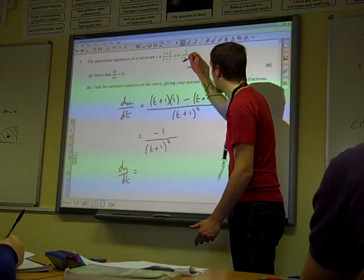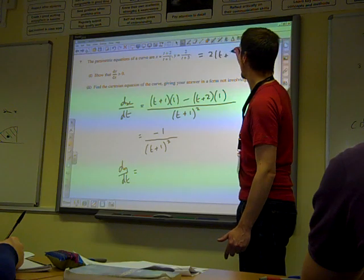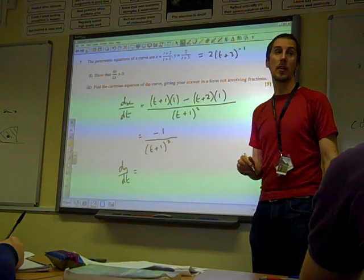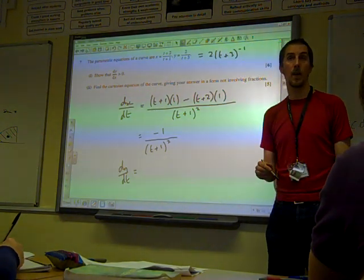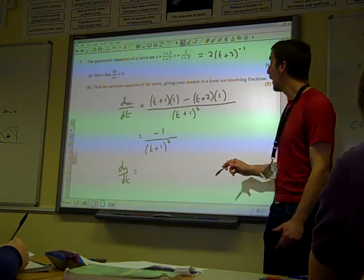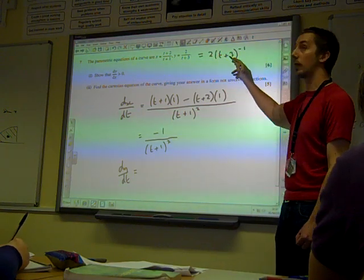is it alright to think of this as being 2 times t plus 3 to the minus 1? Because that, I think, is going to make this slightly simpler.